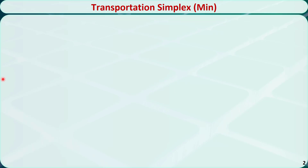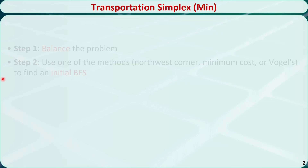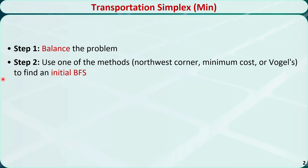The transportation simplex method for a minimization transportation problem can be described in five steps. Step 1, if the transportation problem is not balanced, we need to balance the problem first. Step 2, use one of the methods to find an initial basic feasible solution. It can be the northwest corner method, minimum cost method, or Vogel's method.